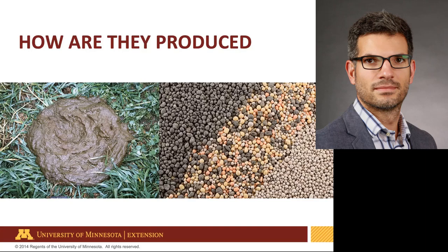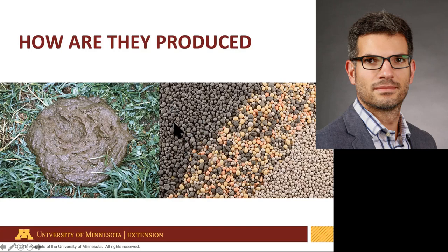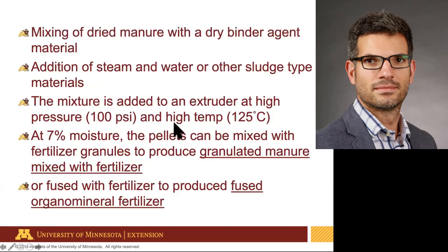How are they produced? Basically, you have a manure source and a dry chemical fertilizer source, and the idea is to combine these two together. Of course, if you just take a manure as it is and try to mix it with your fertilizer, it's going to be very messy and it's not going to work very well.